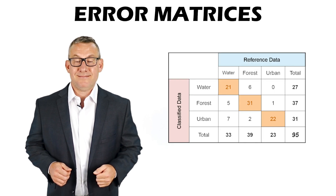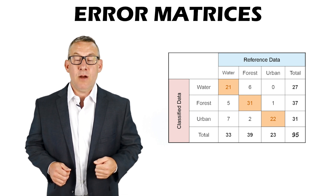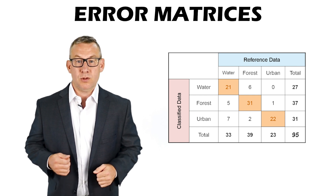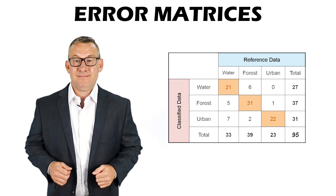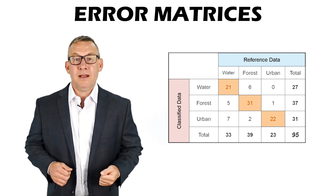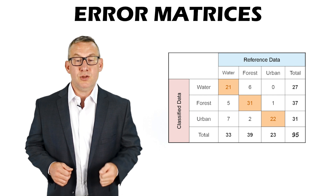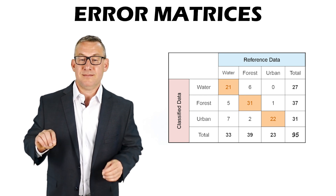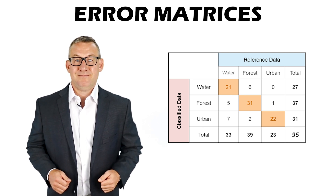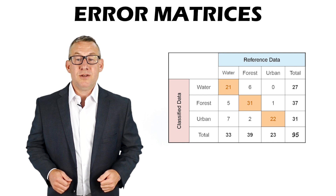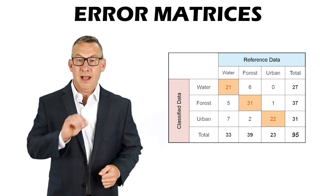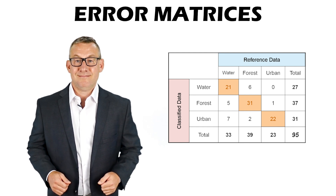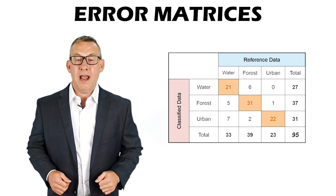An error matrix is a table that can be used to determine the accuracy of categorical data. In an error matrix table, data set values are assigned to one axis and true values are assigned in the same order on the perpendicular axis. Features that match their true values are tallied on the diagonal axis. Error matrices are also called error tables.